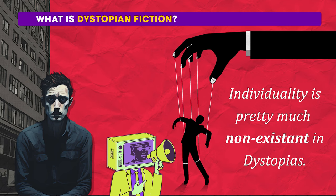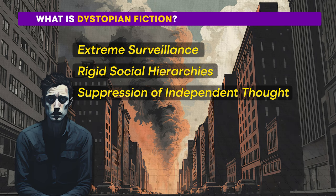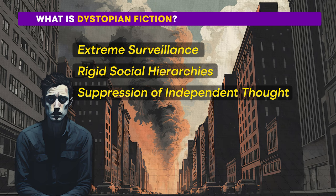Individuality is pretty much non-existent in dystopias. Everyone is expected to act and think the same way, and if you don't follow the rules, there can be serious consequences. People might even be forced to worship unattainable goals or ideas. Importantly, dystopian stories aren't the same as stories about the world after a big disaster. In dystopias, society might still be standing, but it is twisted and broken in its own way. Dystopian societies appear all over books, movies, and other forms of art — especially those set in the future — serving as warnings about what could happen if things go really wrong in our world.